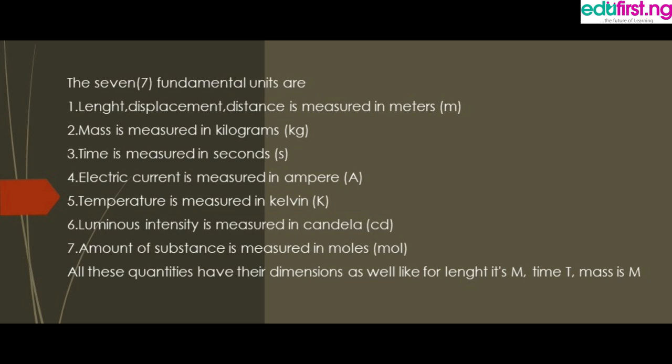All these are the fundamental units. And all these units also have their own dimension. We are talking about units and dimensions. For example, the unit for time is seconds, but the dimension for time is capital letter T. The dimension for length is capital letter L. The dimension for seconds is capital letter T, and the dimension for mass or kilogram is capital letter M.